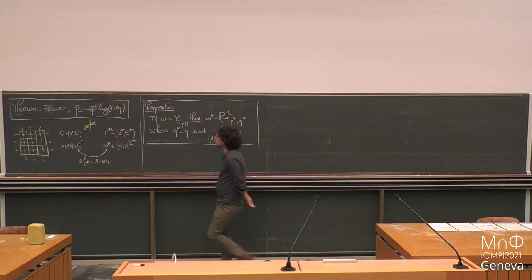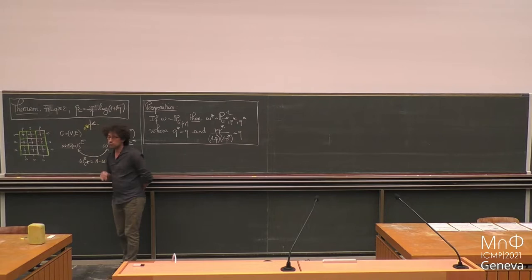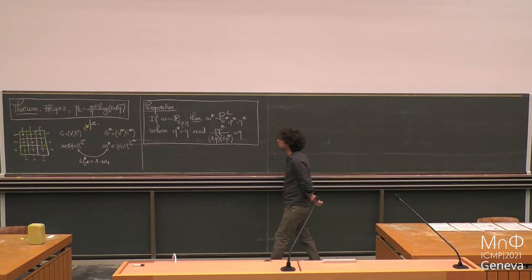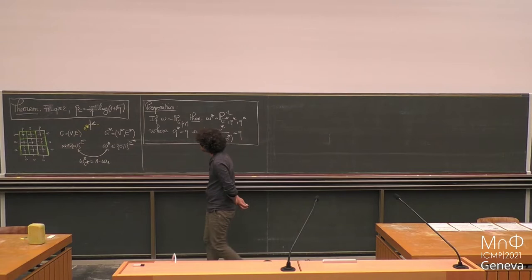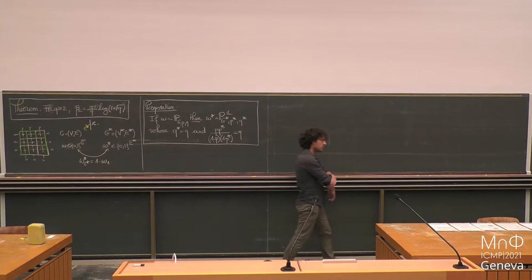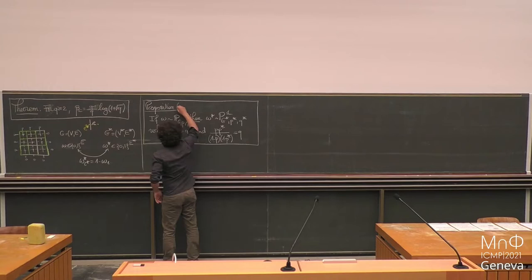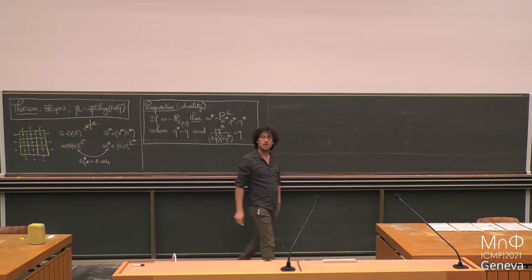Just to remind you of where we finished yesterday. We wanted to prove that the critical point of the Potts model is equal to Q minus one over Q times log of one plus square root Q, for the Potts model on the square lattice. I want to insist that we work on the square lattice. Just after that, I told you I'm going to use a duality connection in the FK percolation, which is not apparent at first sight in the Potts model.